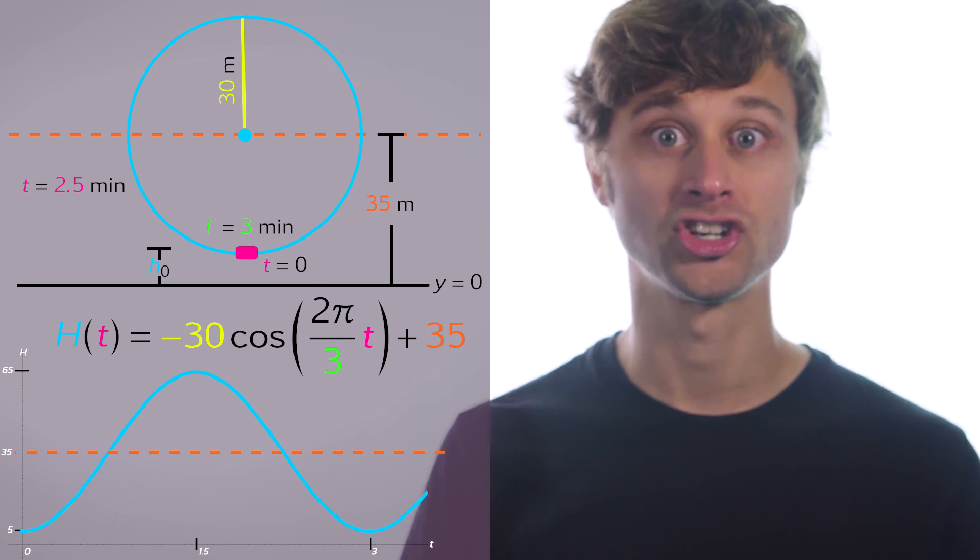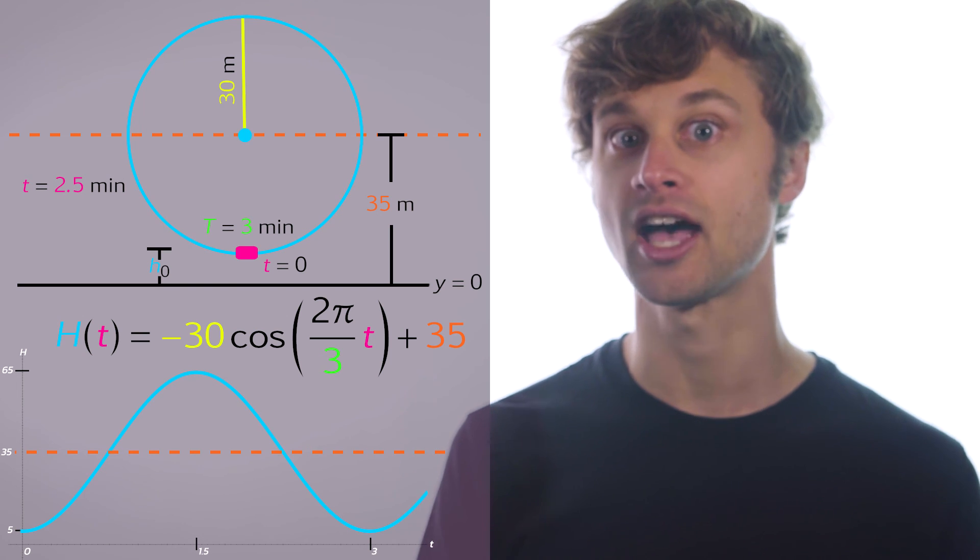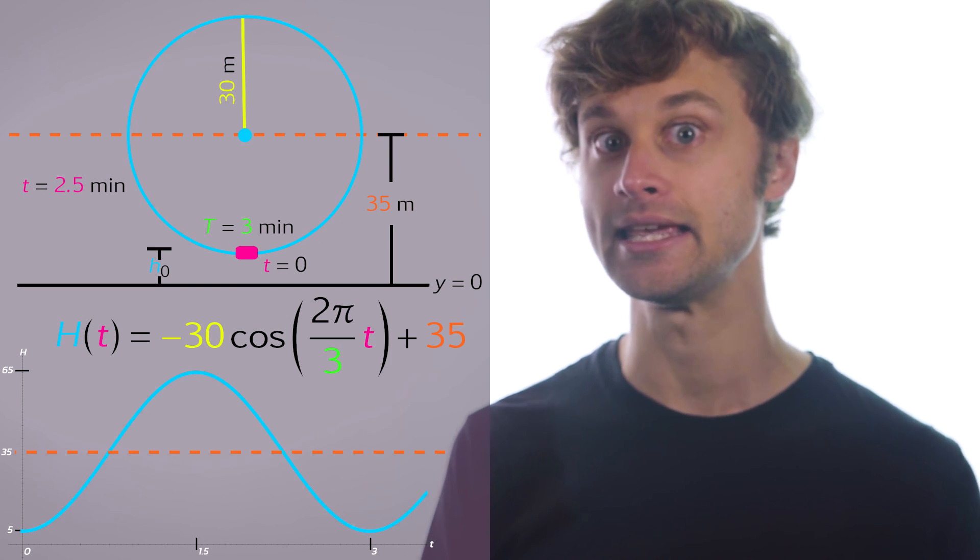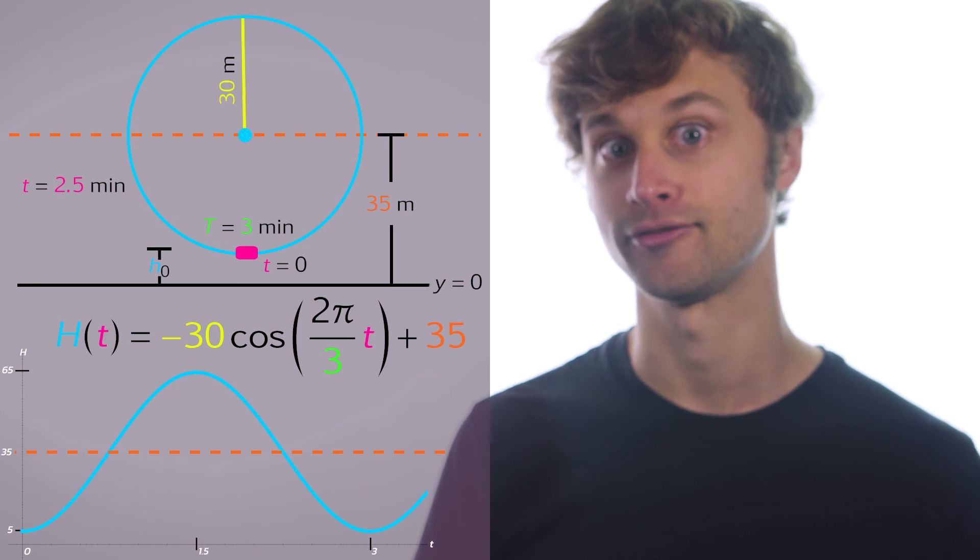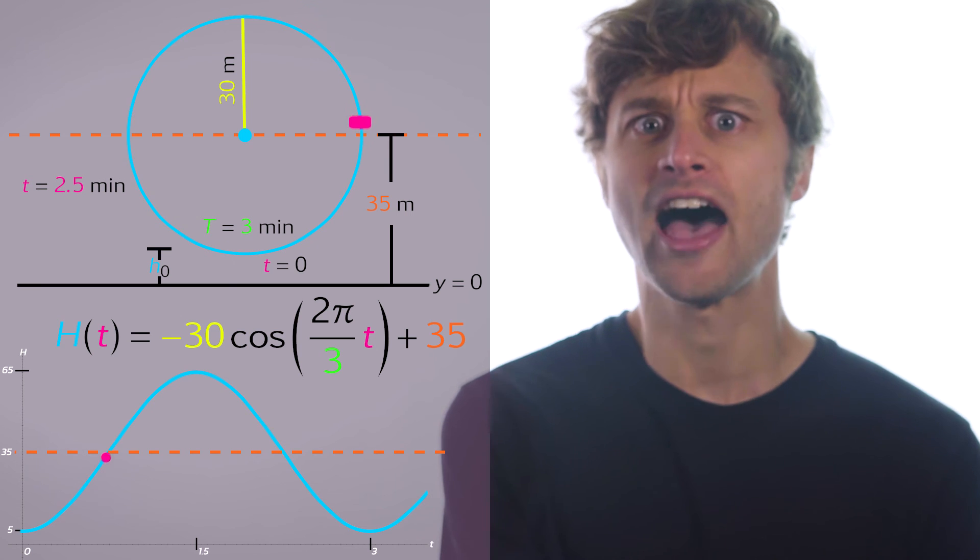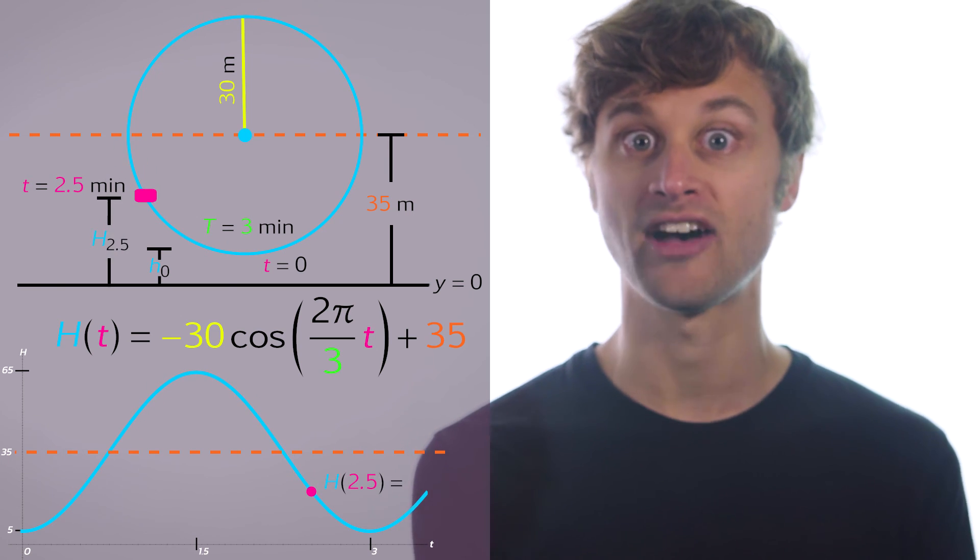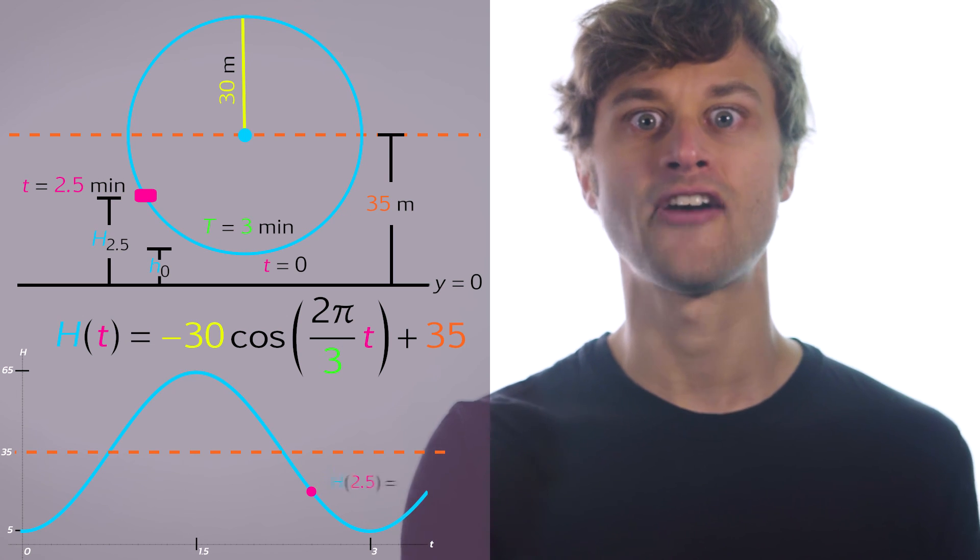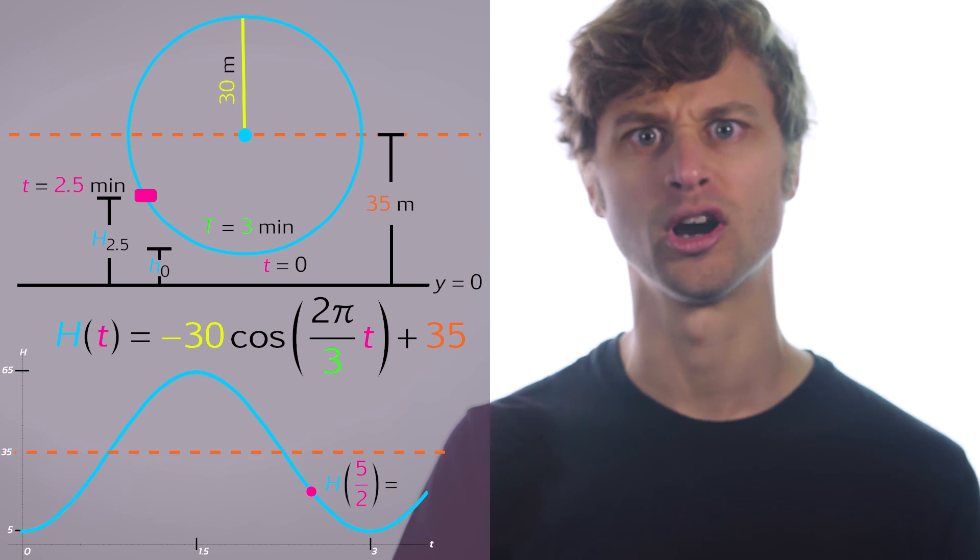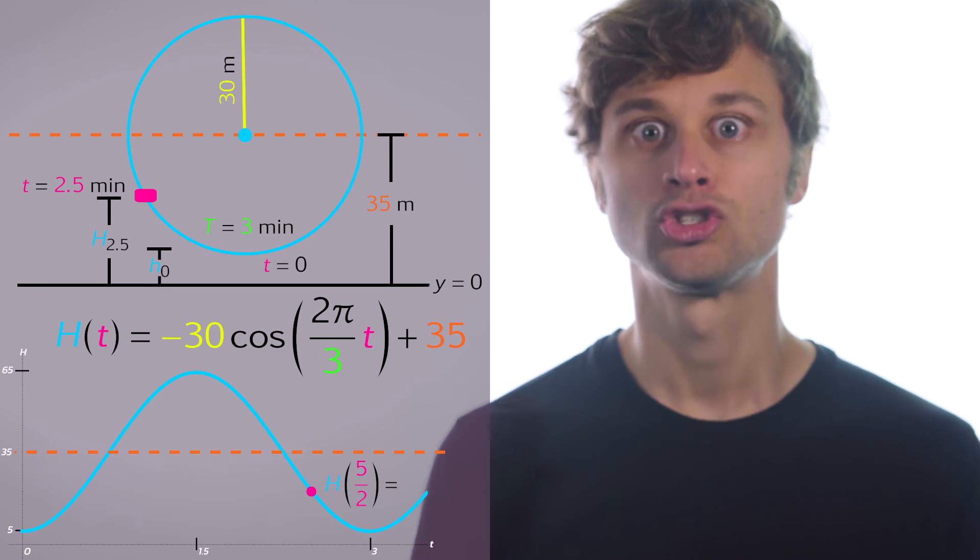So ultimately we have this function: capital H of t is equal to negative 30 times the cosine of 2π over 3 times t plus 35. And we want to find what is the height of this person, so what is the value of the H function when the time is equal to 2.5 minutes? I'm going to convert this into 5 halves minutes just for the ease of doing this mentally instead of using a calculator.